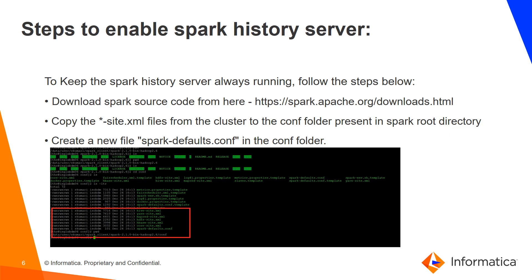Now let's look at the steps to enable the Spark History Server. With respect to Informatica, it is very important to have the Spark History Server started using the same version of Spark that Informatica uses. If there is a mismatch in the Spark version, we will have problems viewing details — we will not be able to get details on the job like executors and statistics, and those will not be displayed on the Spark History Server web page.